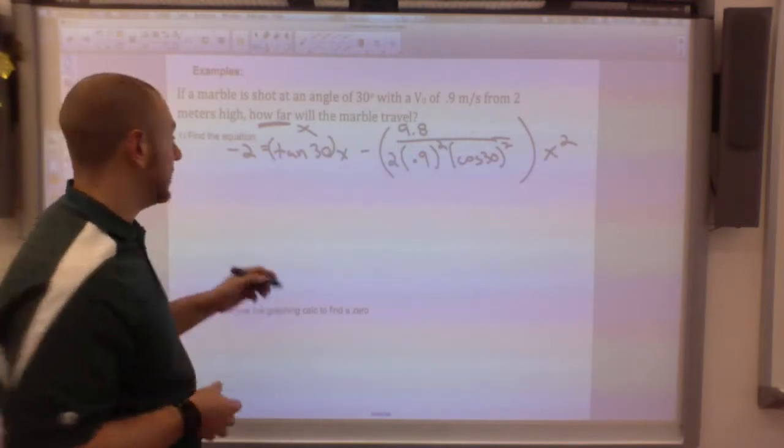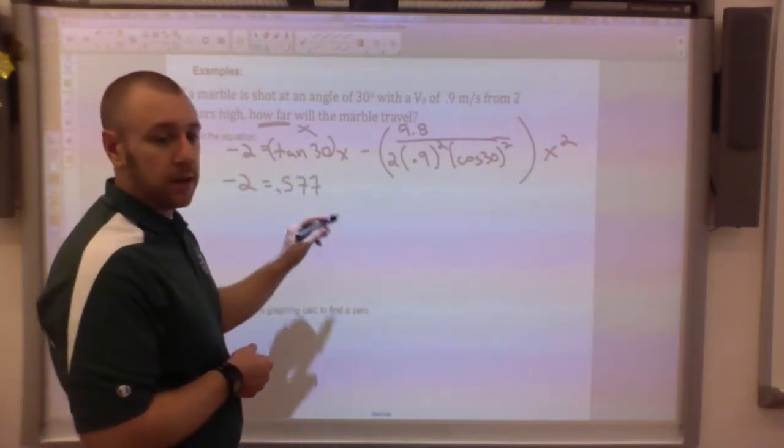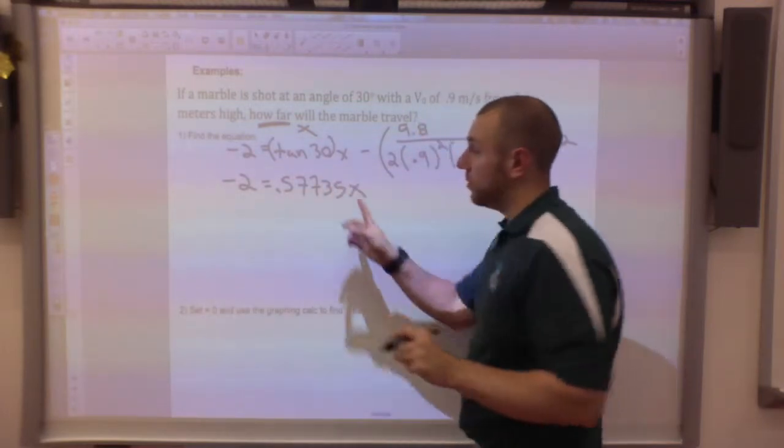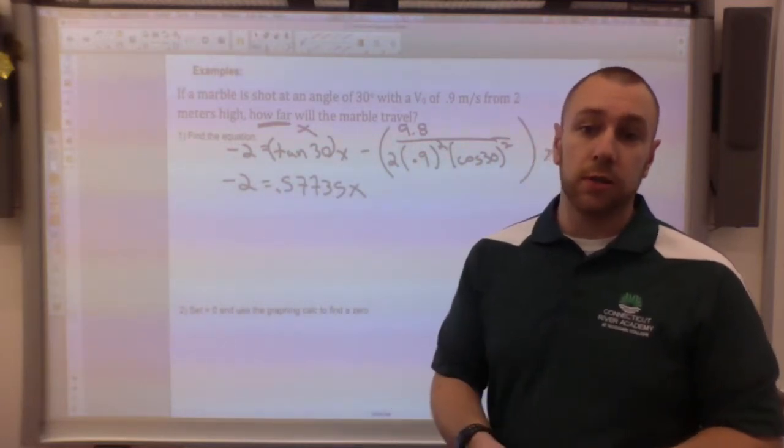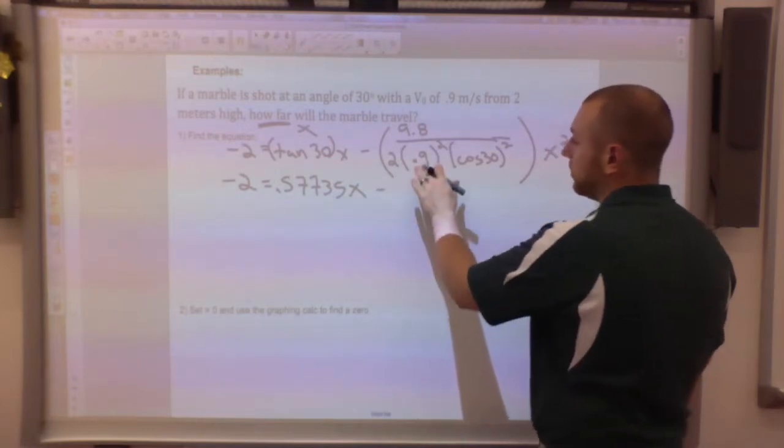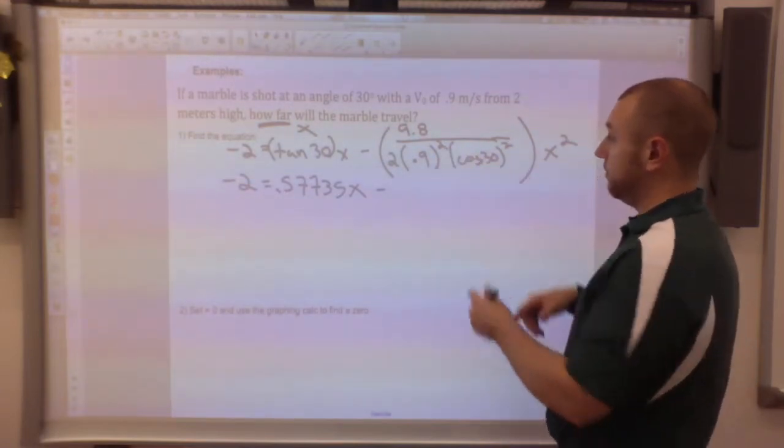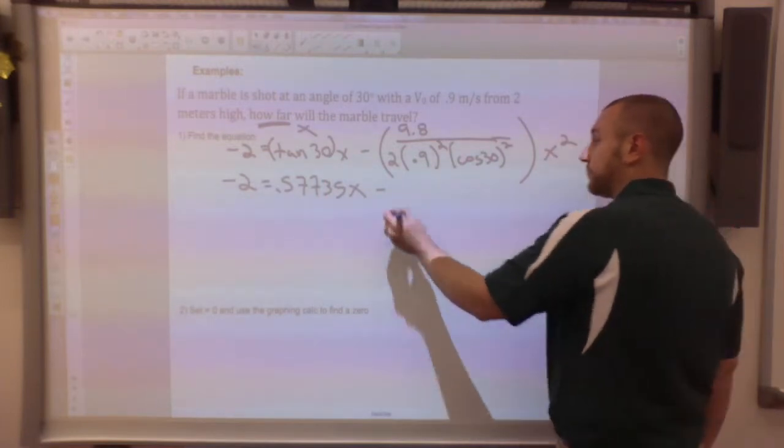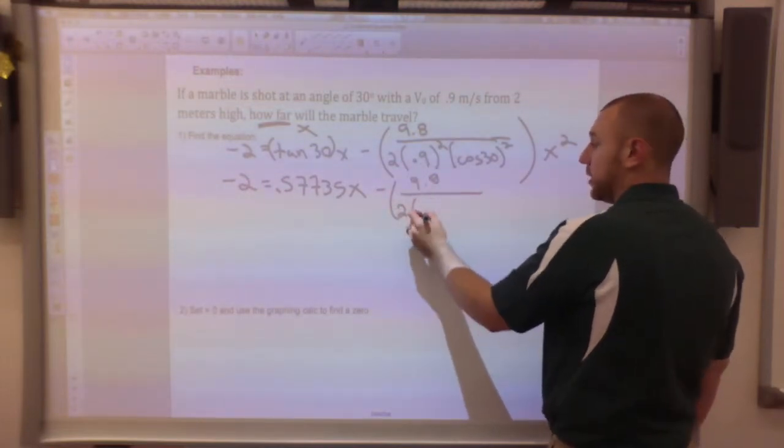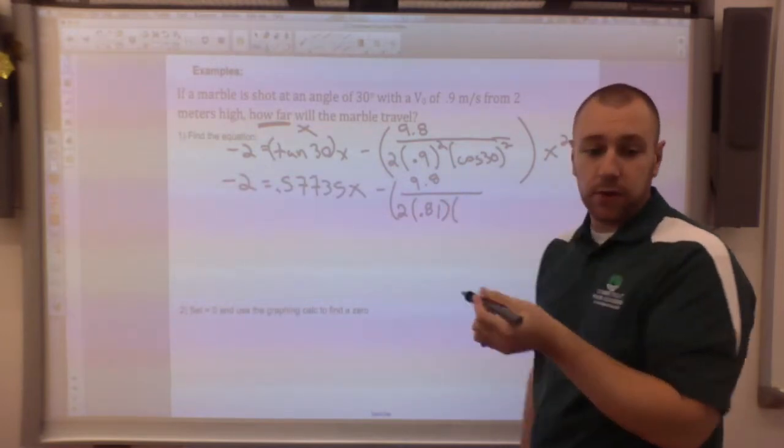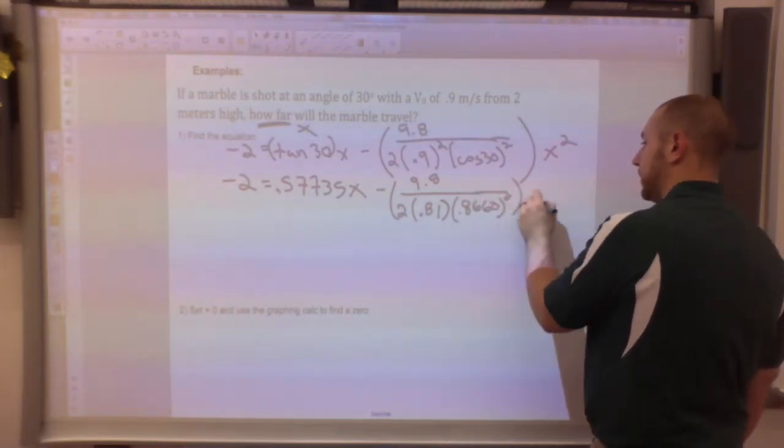I plug this into the calculator and get negative 2 equals 0.57735 x. When dealing with trig values, the more decimal places you have, the more accurate your prediction is going to be. Now I'm doing PEMDAS here, so I'm looking at the bottom. I'm going to square both of these. First I'm going to evaluate the cosine of 30.